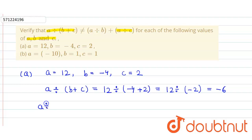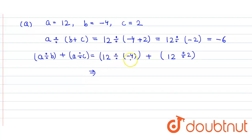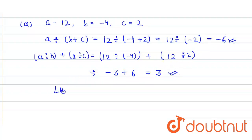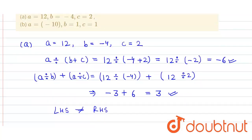Now we find out the right hand side, which is a divided by b plus a divided by c. So here we get 12 divided by minus 4, which is minus 3, plus 12 divided by 2, which is 6, and that equals 3. We can see that the left hand side and right hand side are not equal, so it is verified that the given expression is correct.